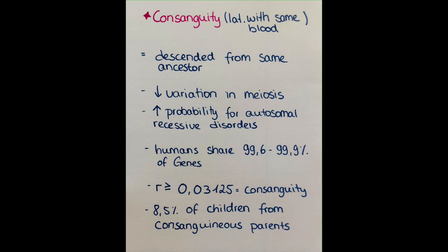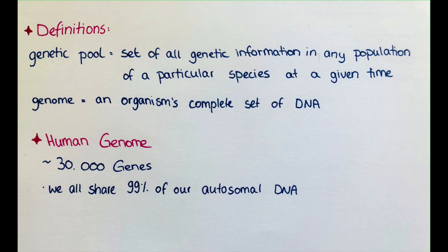As we said, all humans share around 99% of autosomal DNA — about 99.6% for unrelated people and up to 99.9% for closely related people. In consanguinity, the probability of inheriting two recessive disease-coding genes is much higher, because two people sharing the same ancestors are mixing their genomes again, and the pool of genes they interchange is much smaller. First degree relatives share 50% of genes (r = 0.5), second degree 25% (r = 0.25), and third degree 12.5% (r = 0.125).